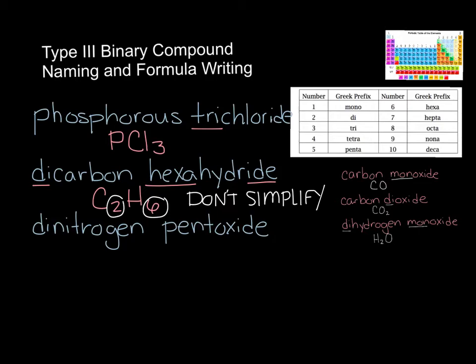The last example is dinitrogen pentoxide. The prefix di means 2, so N2, and penta is 5, so oxygen has 5 — giving us N2O5.